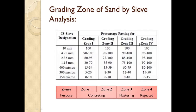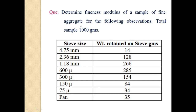IS 383:1970 specifies four ranges of zones — Zone 1, Zone 2, Zone 3, and Zone 4 — for fine aggregates. This table gives the range of percentage passing for each zone. According to the grading zones, Zone 1 and Zone 2 are used for concreting or RCC purposes, Zone 3 is used for plastering, and Zone 4 — which is very fine sand — is rejected and not used.